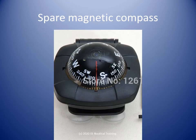Vessels more than 150 gross tonnage and all passenger ships must carry a spare magnetic compass interchangeable with the magnetic compass. Pleasure boats are less than 150 gross tonnage.